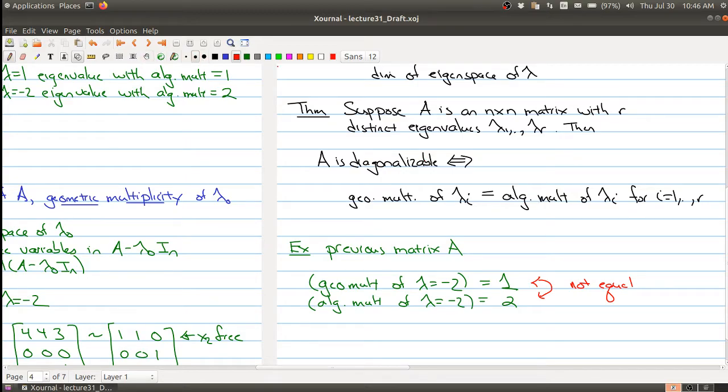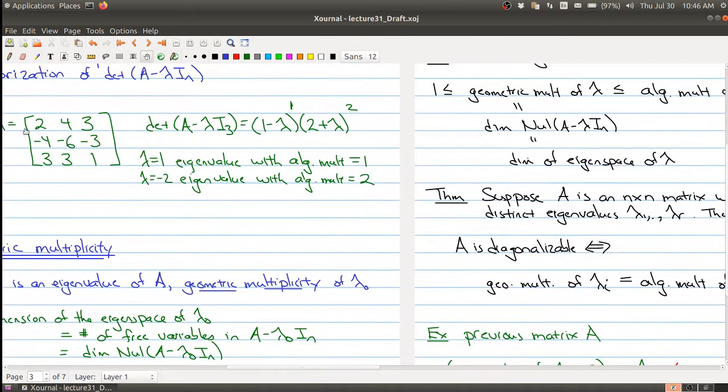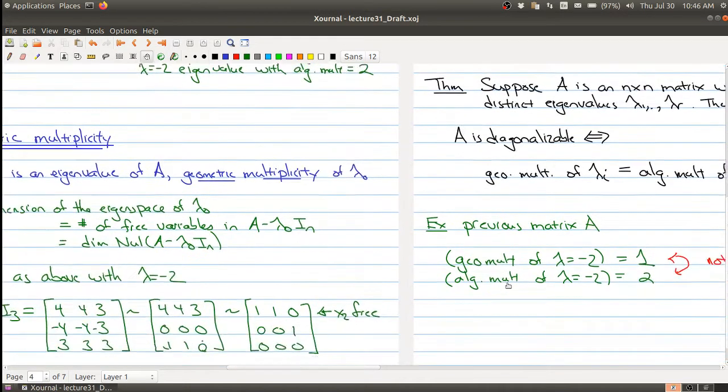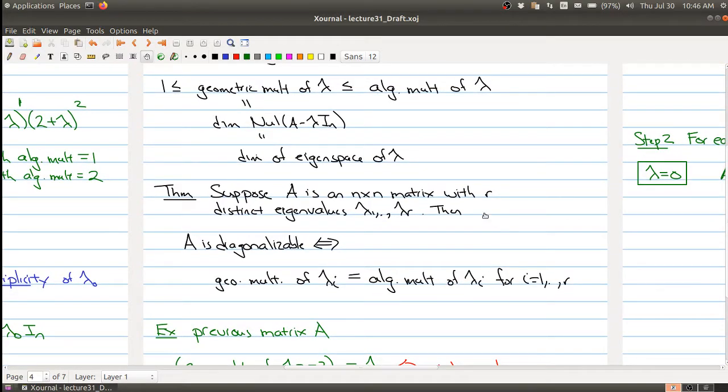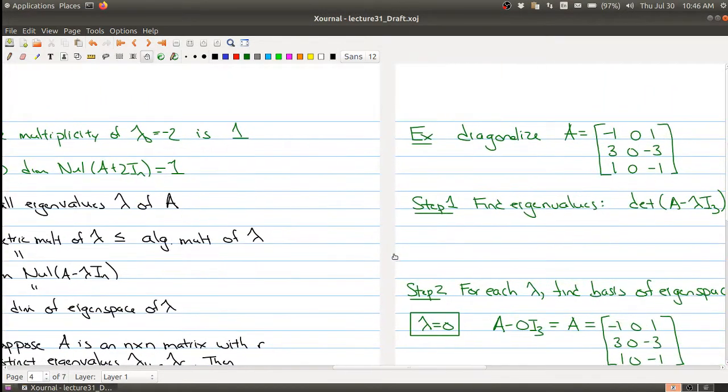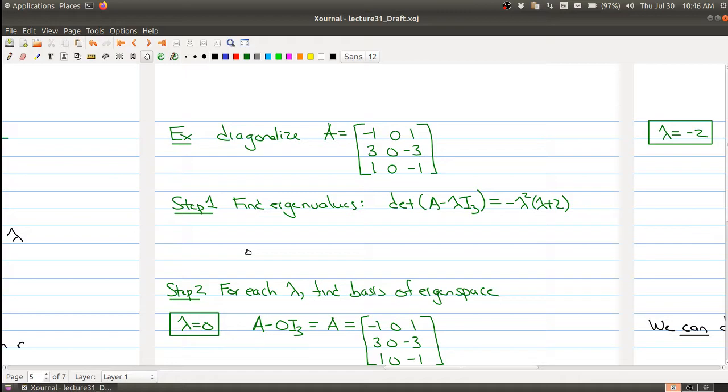Since they're not equal, it can't be diagonalizable. Without doing any more work, I know that this matrix I cannot write in a diagonalizable form. So instead, I want to show you an example where these numbers are bigger than one where we can diagonalize it. I'm going to break this example up into two parts.